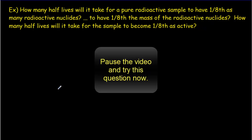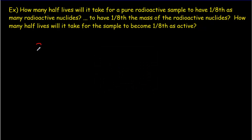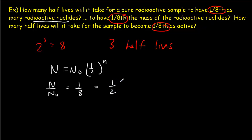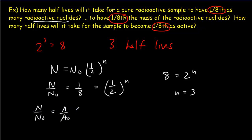Here's another example — read over the question, try it out, and then come back for the answer. You might see right away that 2³ equals 8, and therefore we want to get one-eighth the mass, one-eighth the number, or one-eighth the activity. That means we have to wait for three half-lives. We can also do this as an equation: N/N₀ = 1/8 = (1/2)ⁿ, so 8 = 2ⁿ and n = 3. Because of proportionality between N, m, and A, we can equally write N/N₀ = A/A₀ = m/m₀ — all give the same answer.